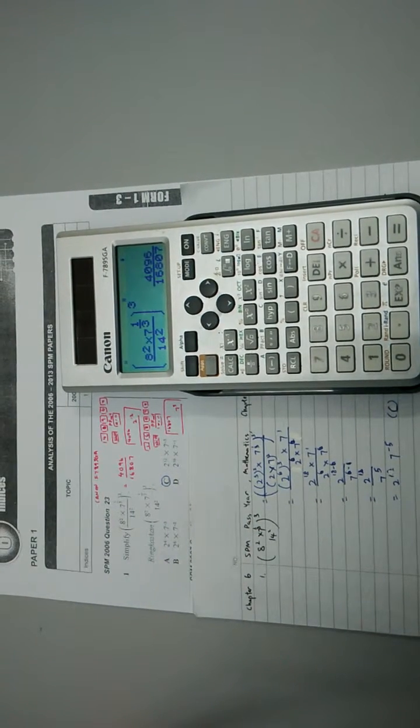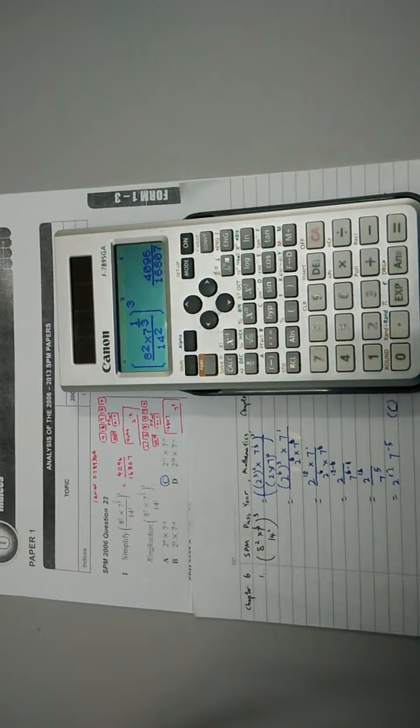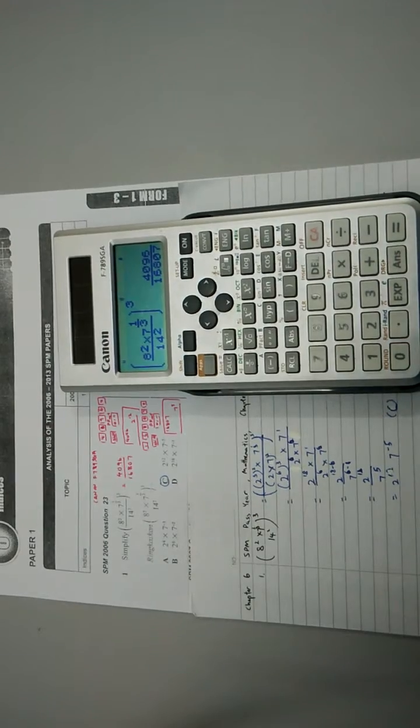Calculator will return 4096 over 16807. So there's two ways to find the answer.